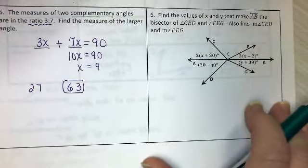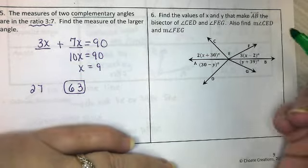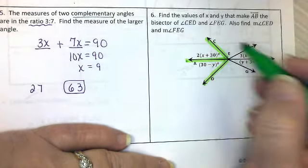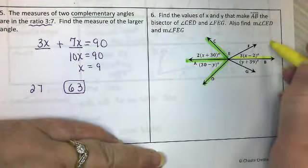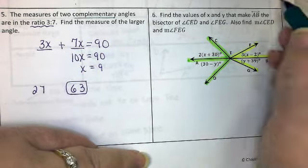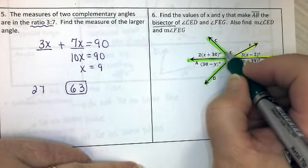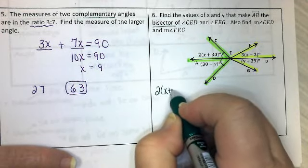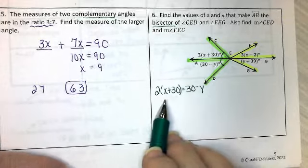Number 6 has a lot going on here. Find the values of x and y that make AB the bisector of angle CED. Here's angle CED. And I want AB to be the bisector of that angle. And I also want AB to be the bisector of angle FEG. So I've got two things to solve. Remember what a bisector does? It cuts it into two equal parts. So if AB is a bisector, this angle is equal to this angle.